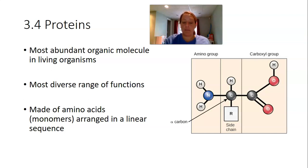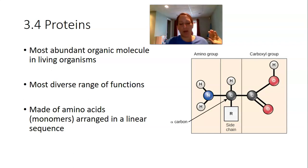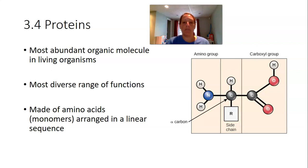Proteins are made up of amino acids. Amino acids are the monomers — just like in carbohydrates, monosaccharides were the building blocks, in proteins amino acids are the building blocks. They are the monomers joined together to create the polymers we call polypeptides or proteins.